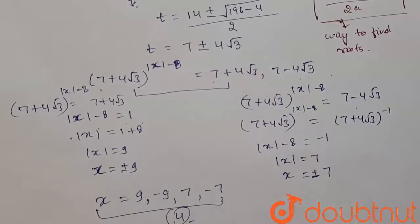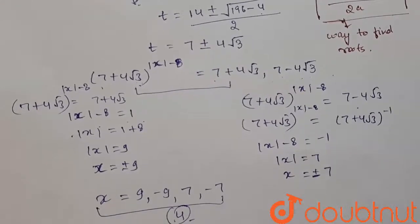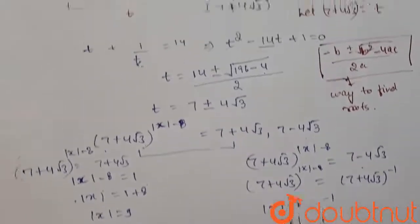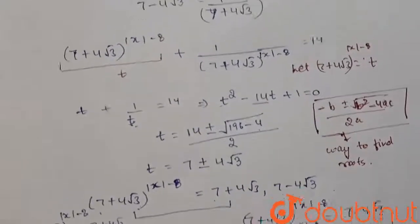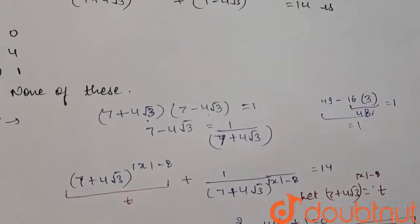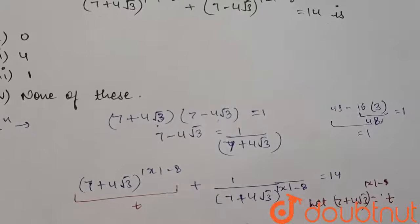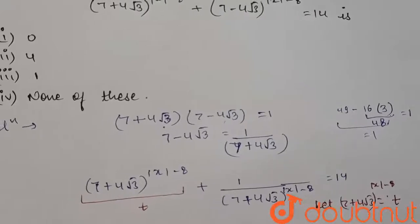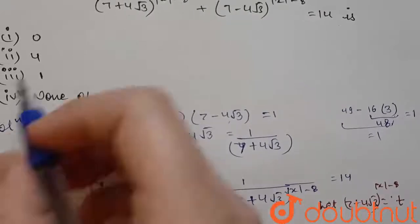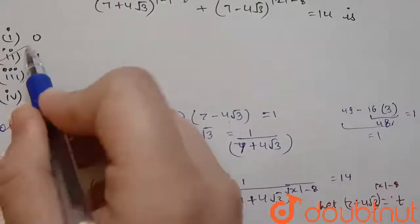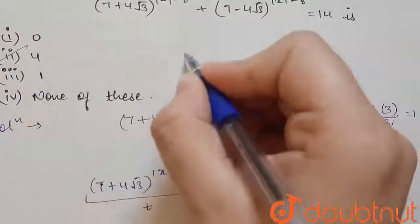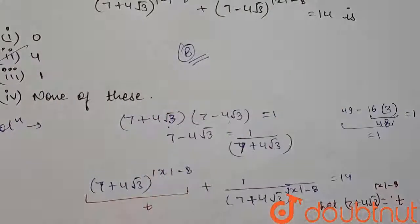We have four values of x, so the number of real roots is 4. Looking at the options — 0, 4, 1, and none of these — our answer is 4, which is option B.